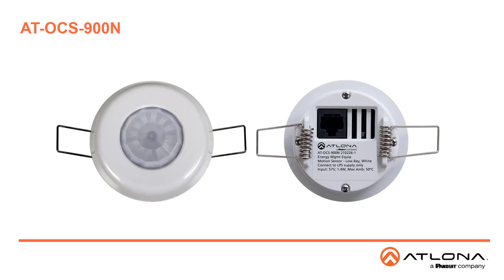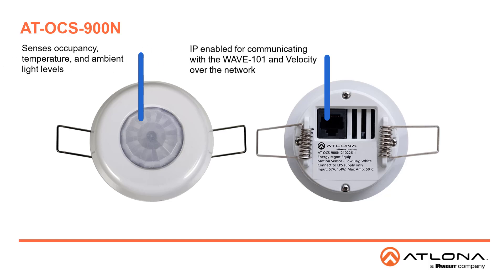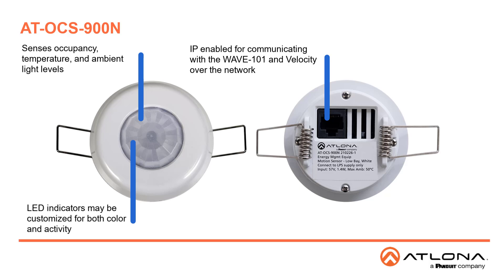The OCS900N contains a number of additional features. This sensor is considered multifunction because it doesn't just sense if people are in the room for AV automation — it also detects temperature and ambient light levels. It's IP-enabled for communicating directly with the Atlona AT-WAVE 101 for automatic display control and works with the Velocity AV control system for more complex automation applications. Customizable LED indicators allow you to change colors by RGB or hex values to set the sensor apart from other equipment in the space.